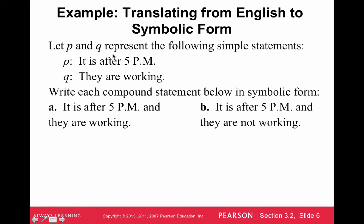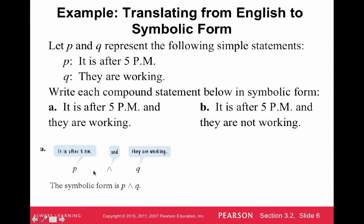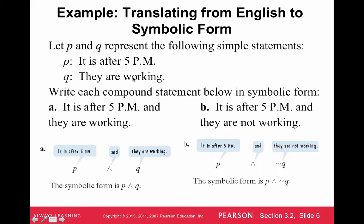Let P and Q represent the following simple statements: P is 'it is after 5 p.m.' and Q is 'they are working.' Write each compound statement in symbolic form. 'It is after 5 p.m. and they are working' is just P ∧ Q. The next statement, 'it is after 5 p.m. and they are not working,' uses a negation of Q, so we have P ∧ ¬Q.